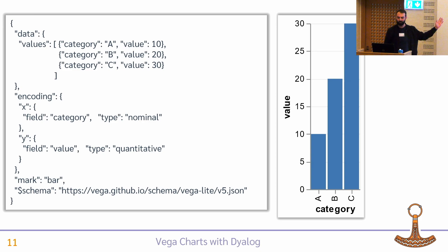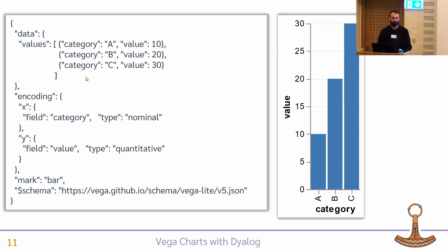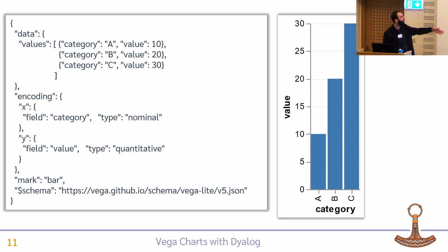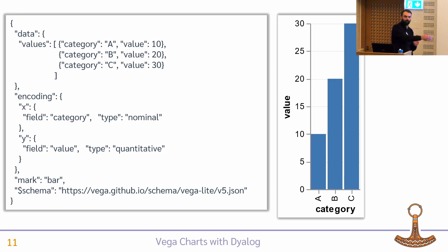Here's a Vega-Lite specification — you can see it's much shorter. The data is embedded as a JSON list of objects, so name-value pairs. It's not the most efficient representation of tables, but I'll get back to that. You specify the mark type — here it's bar — and then use encoding fields to map columns onto the different axes. The nominal categories get distributed evenly along the x-axis, and the numeric quantitative values dictate the length of the bars.